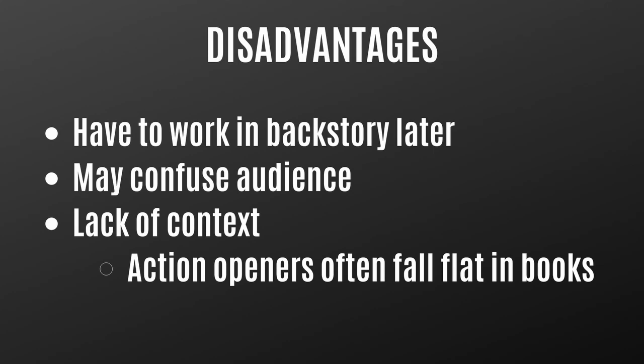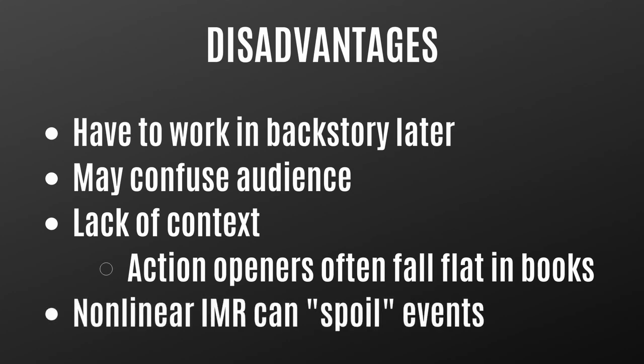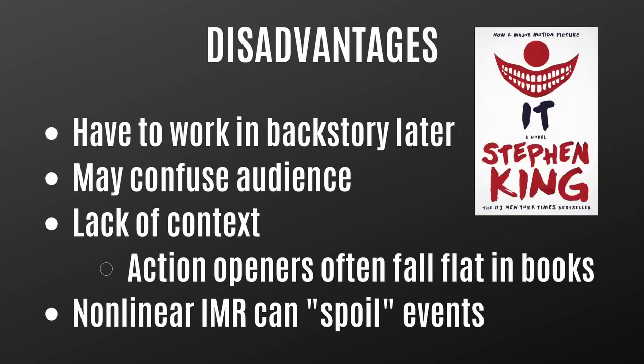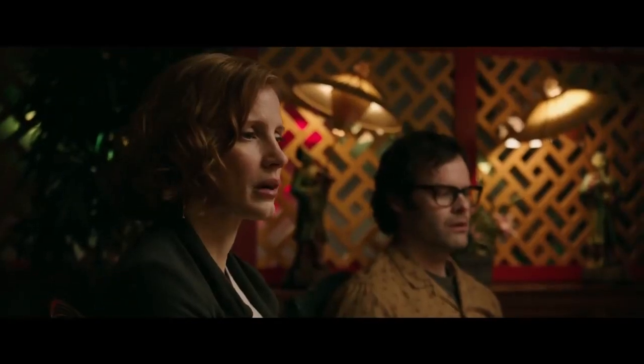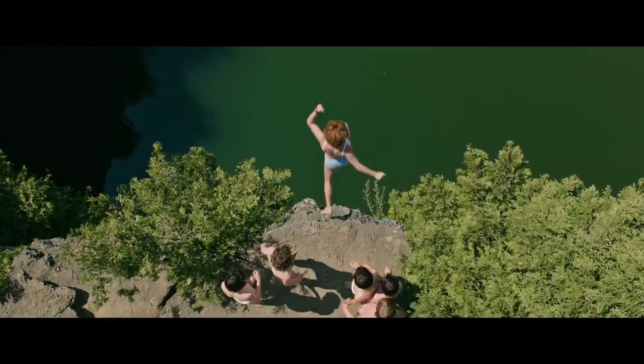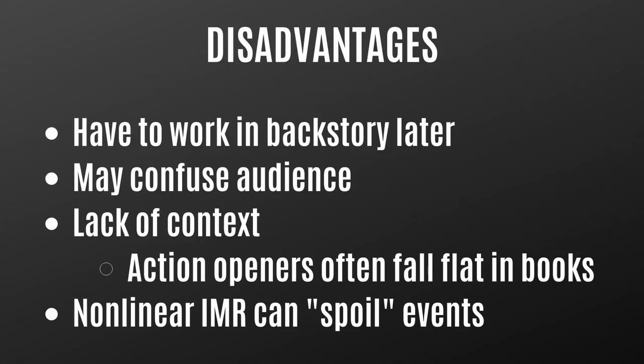One final disadvantage is that non-linear In Medias Res — especially flash-forwards — can spoil events and rob the story of suspense. An example is the book It by Stephen King. It opens by showing all the main characters as adults, then goes back in time to show them as children. We spend a lot of time with them as kids, but whenever they're in mortal danger, we already know they survive into adulthood. So if you start at a later point and jump back in time, the audience will know the future and may not feel the full impact of life-and-death stakes.